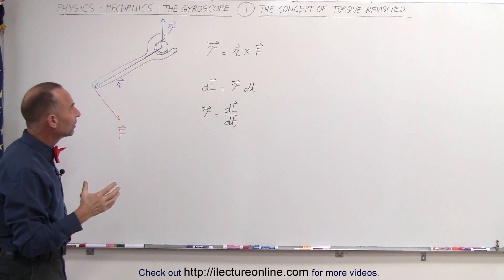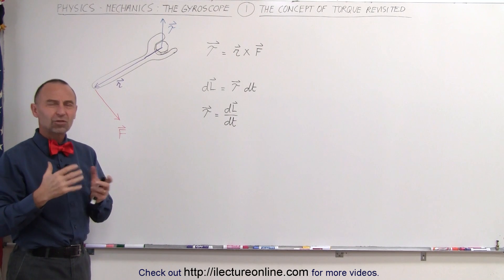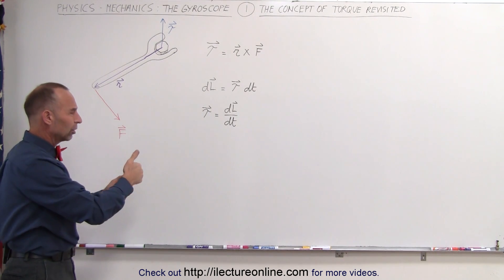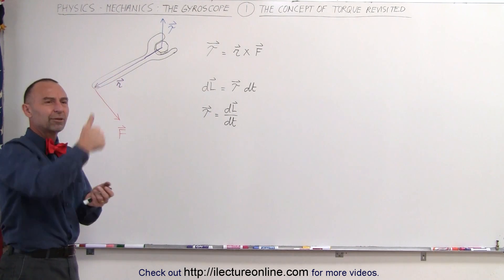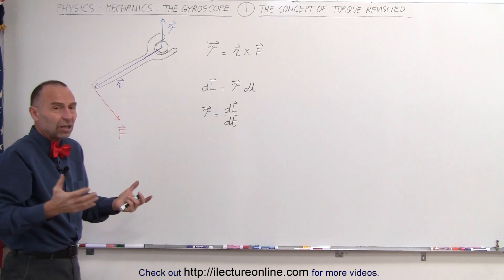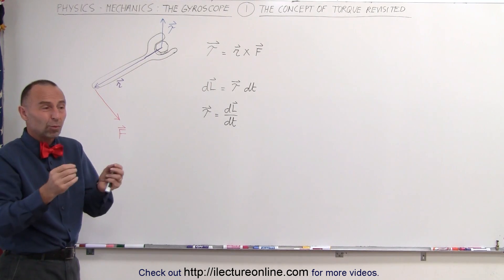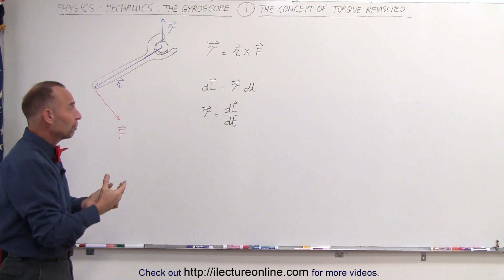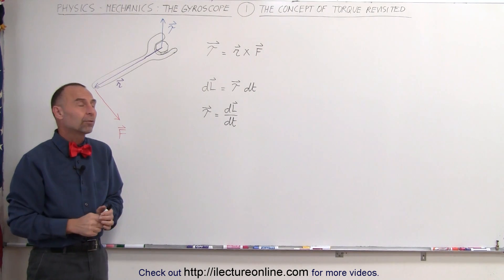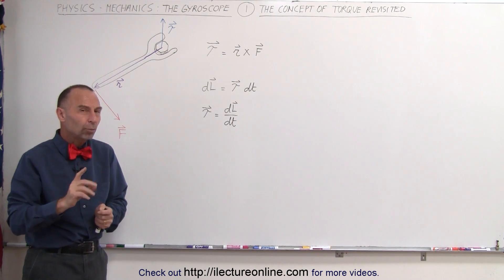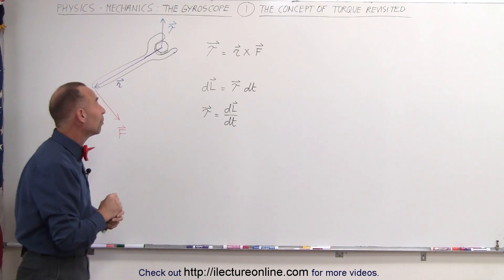Now this is where that becomes a little bit more mysterious. Why does the torque, the vector of the torque, point straight out from the bolt? What is the meaning of that? And in most cases we just tend to ignore that. We just want to get the magnitude of the torque, especially when we want to solve statics problems. But when we deal with gyroscopes, that direction will become very important.